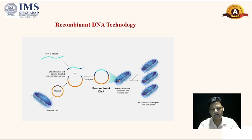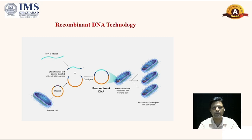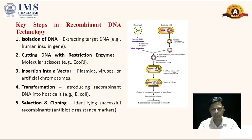The cells will divide further and multiple copies of that target DNA, or DNA of interest, can be achieved. This is a technique to produce many copies — cloning of that particular DNA — which can later be expressed in expression vectors to produce proteins as well.